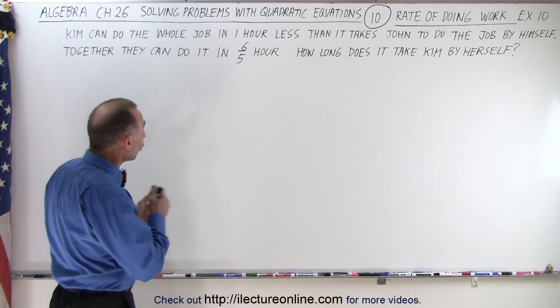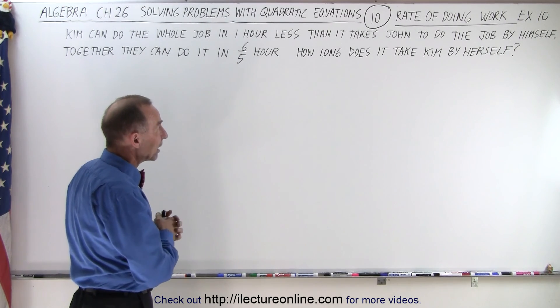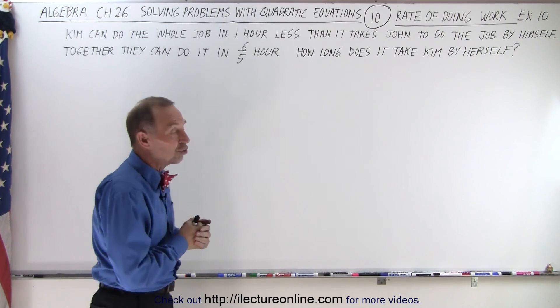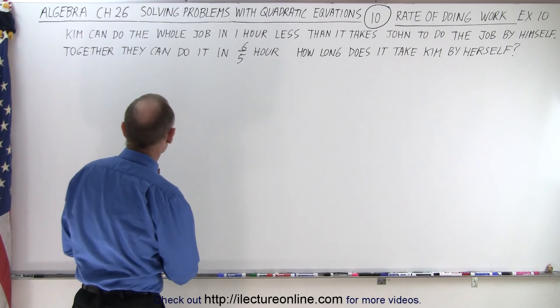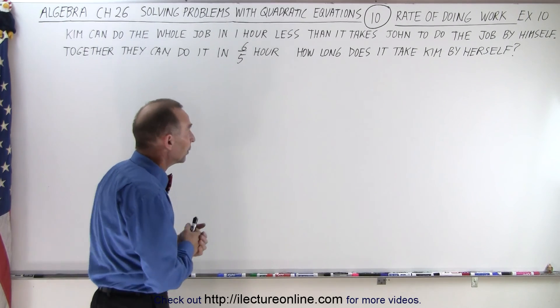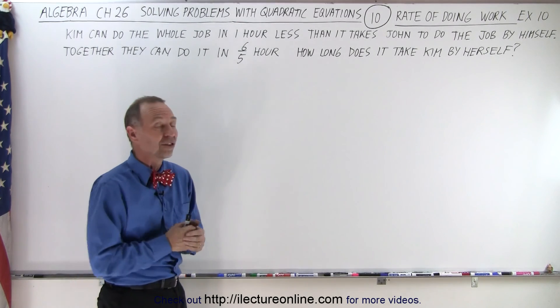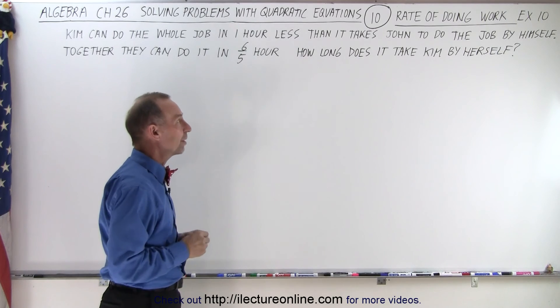Kim can do the whole job in one hour less than it takes John to do the job by himself. Together they can do it in six-fifths of an hour. How long does it take Kim to do the job by herself?